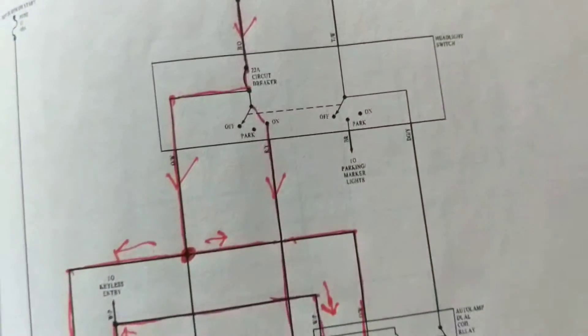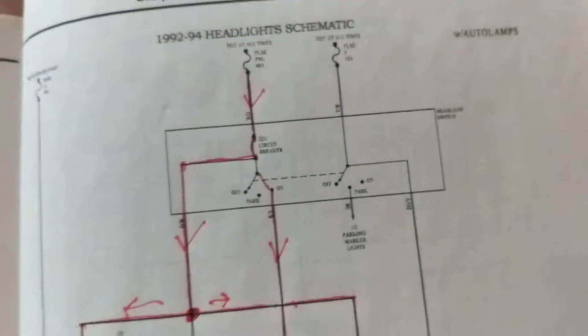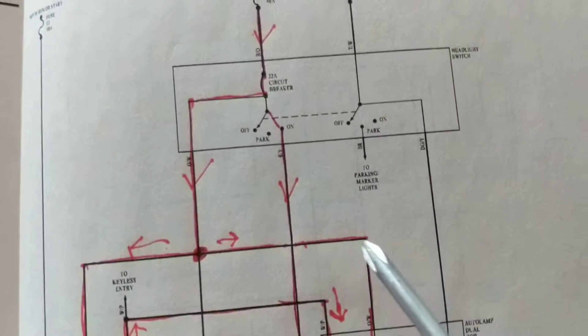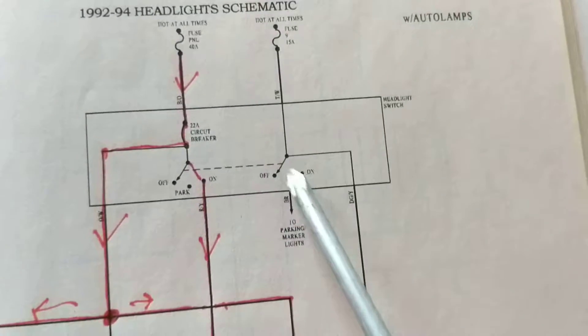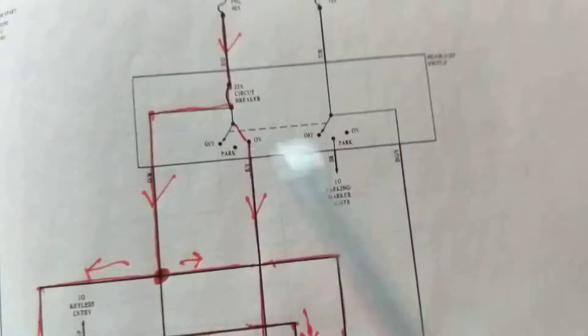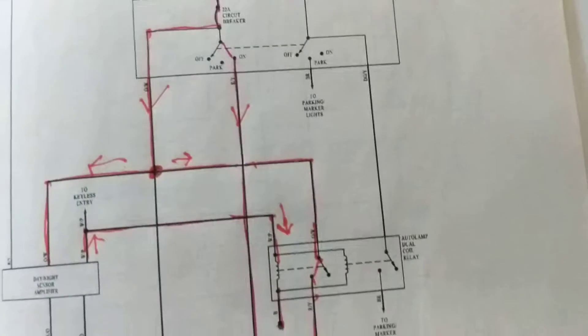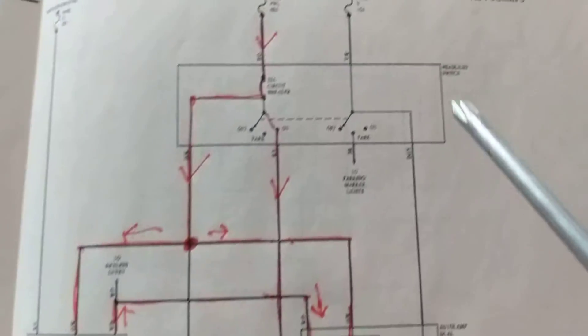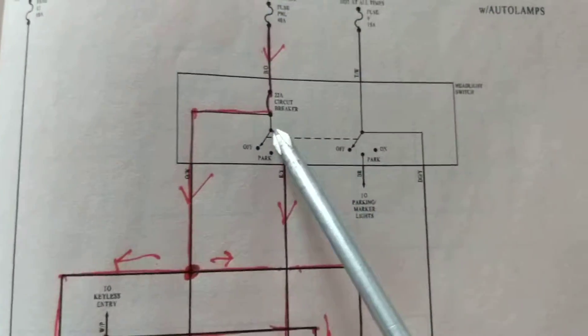Now, interesting diagram is the reason that I said it, is because if you look, there is a connection before the switches. You don't have to activate the switches. This is daytime running lights. So let's look at it and analyze it.